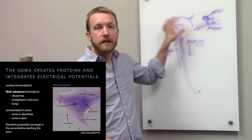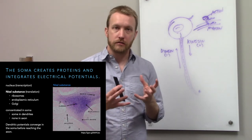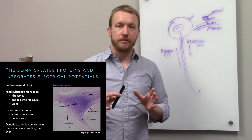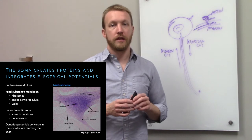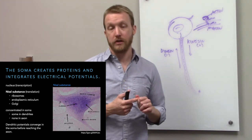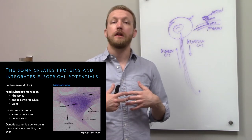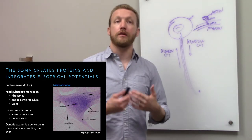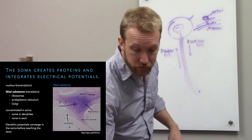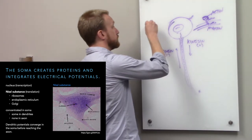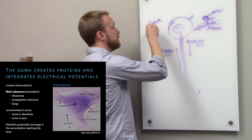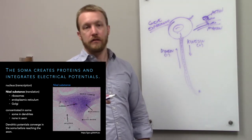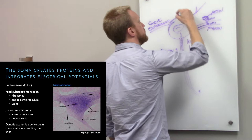The cell body doesn't seem elaborate, but it's very important because that's where proteins are created. It contains Nissl substance — ribosomes, the rough ER, and the Golgi — all the stuff needed for translation. It also contains the nucleus for DNA and transcription. When you think cell body, think protein production or gene expression.